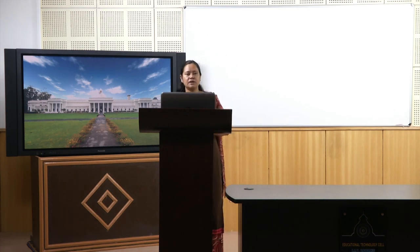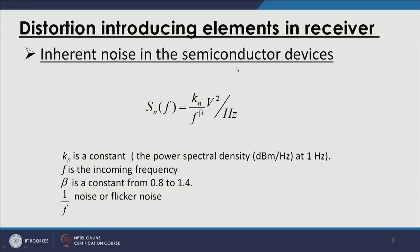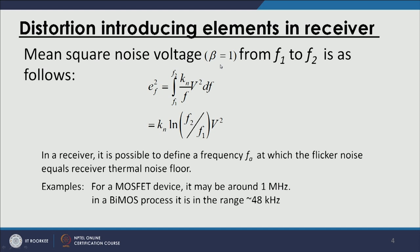Beta is a constant ranging from 0.8 to 1.4, and 1/f is specifically called flicker noise. If we want to calculate the noise in a frequency band from F1 to F2, taking beta equal to 1, we integrate Kn/F · V² dF over that range. The integration of 1/f yields the natural logarithm of F2/F1, giving us the expression for the mean square noise voltage.